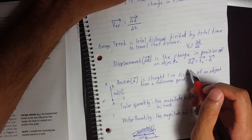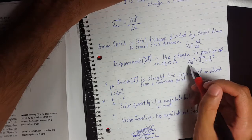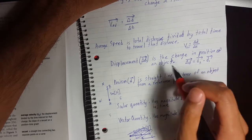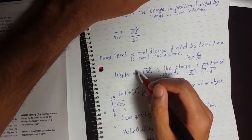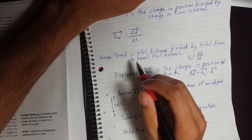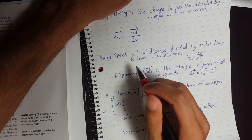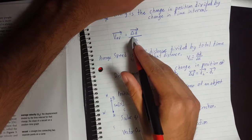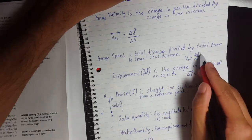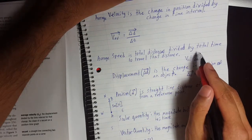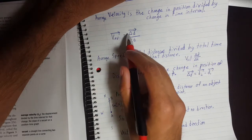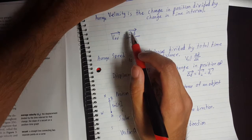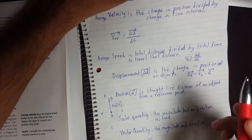Displacement is basically the change in position of an object, calculated by: displacement equals D2 minus D1. Average speed is actually a scalar quantity. Some people confuse it with velocity. If you look at the formula for average velocity and the formula for average speed, they look similar — but velocity has arrows over the variables and speed doesn't. An arrow means it's a vector with magnitude and direction; without arrows, it's a scalar quantity.